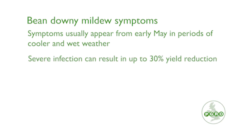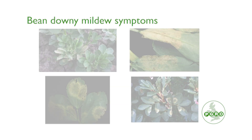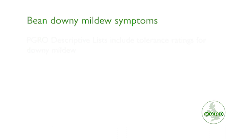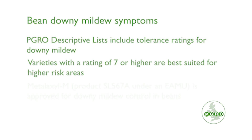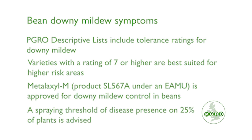Severe infection can result in up to 30% yield reduction. The descriptive list for spring and winter beans includes tolerance ratings for downy mildew. Varieties with a rating of 7 or higher are best suited for higher risk areas. Currently, Metalaxyl-M, product name SL567A under an EAMU, is approved for downy mildew control in field beans. A spraying threshold of disease presence on 25% of plants is advised.